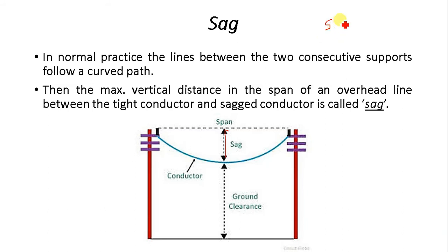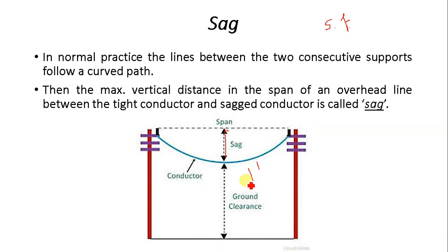The tension in the conductor is always limited by its ultimate strength, and that is why we consider a term called safety factor (SF). The tension in the conductor depends upon the diameter of the conductor, the material of the conductor, the sag, the wind pressure, and also the temperature. All these things must be considered while defining the ultimate strength of the conductor.